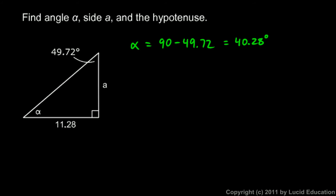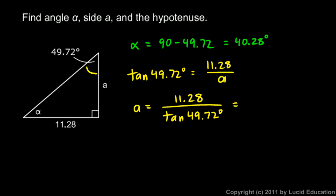Now I'm going to find side A. Look at this angle, 49.72. This is the opposite side and that's the adjacent side for that angle. So I know the tangent is opposite over adjacent. The tangent of 49.72 degrees has to be 11.28 divided by A. I can rearrange this equation. I get A equals 11.28 divided by the tangent of 49.72 degrees. I do that on the calculator and it comes out to 9.559.